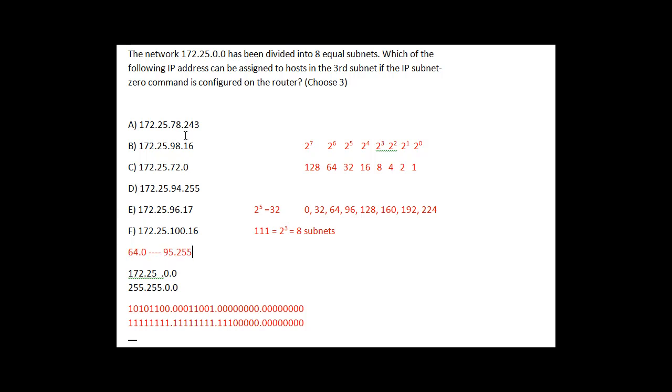Okay. So now it makes it easy. We just look here and we say which one of these satisfies that answer. So we see here, 78, is that in between this range? Yes, this is in between this range. So this is one of the answers. Is this in the range? 98.16? Nope, that's not in the range. 72.0, yep, that's in the range. 72 is between 64 and 95. Okay. 94.255, yep, that's in the range. Okay. But look at this one, 96, nope, that's outside of the range. And then 100, that's outside of the range. So anyway, once we have the range, we have to know what our network is. We always have to be able to find what is our network number, what is our broadcast number, and then the answers become easy.